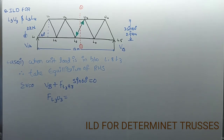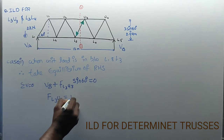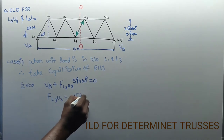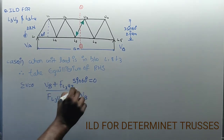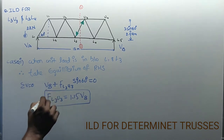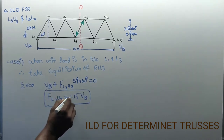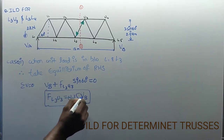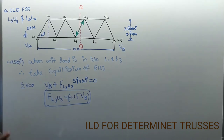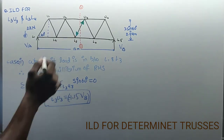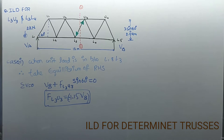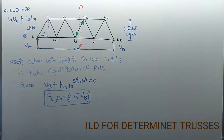Therefore F(U3L3) = −1.15 VB. The assumed direction — compression — is not correct; this member will be in tension. Remember this value: −1.15 VB.